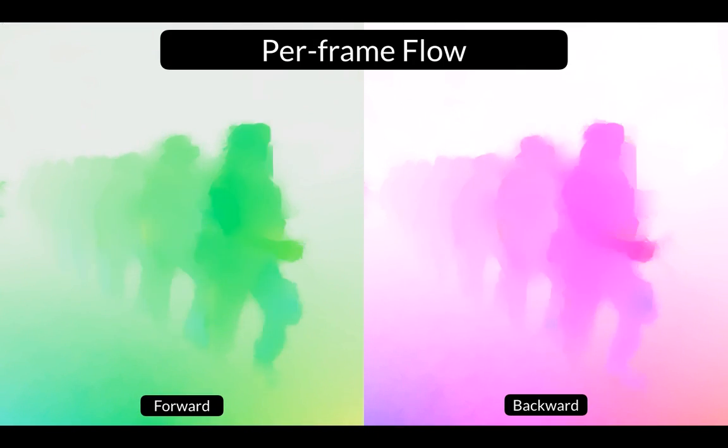Individually smoothing each frame's flow field produces reasonable results for any given frame, but results in a temporally inconsistent flow field.